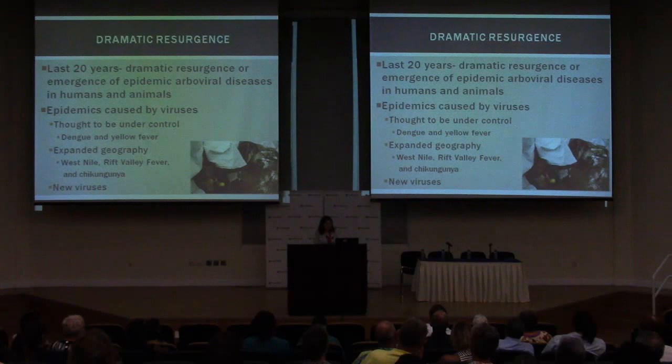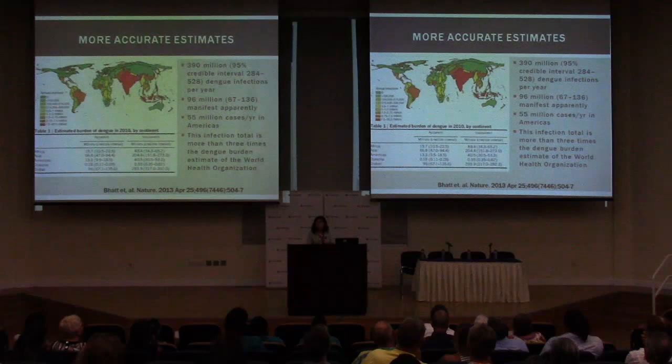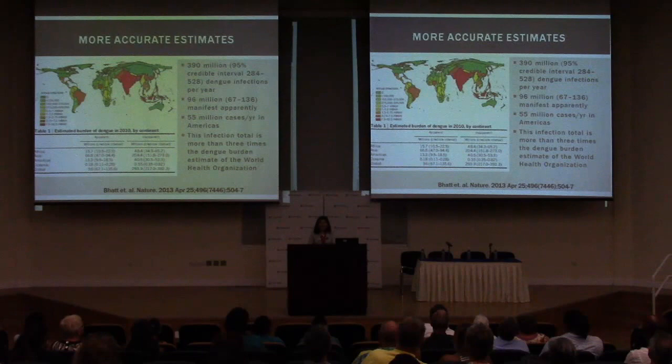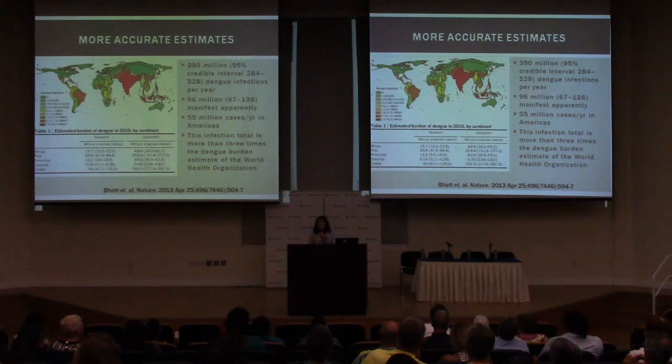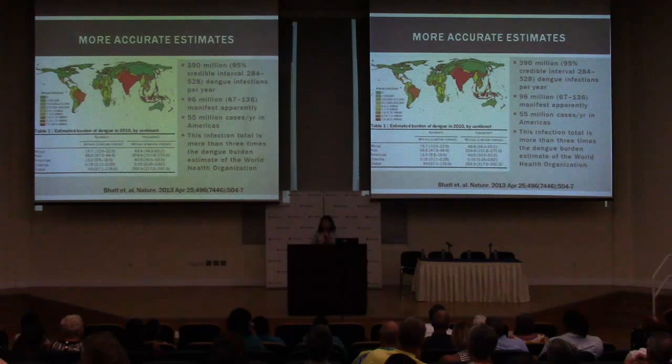There are about 50 to 100 million dengue infections per year by older estimates, but more recent accurate estimates show about 400 million dengue infections per year. With dengue it's important to know that only about 25% of people who get infected actually show signs of disease — a lot of infections occur in people with no symptoms. So we think there are 400 million dengue infections per year, but only about 100 million manifest symptomatically.